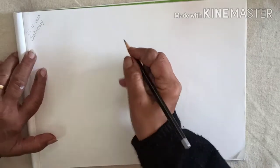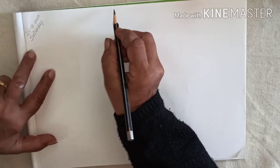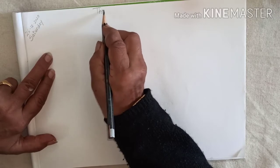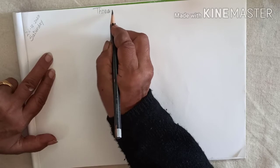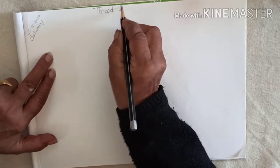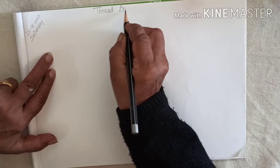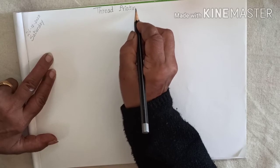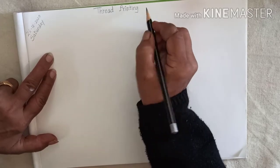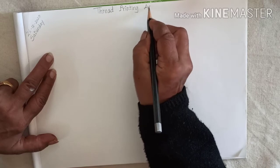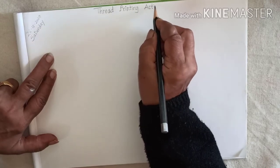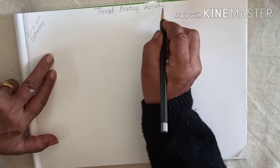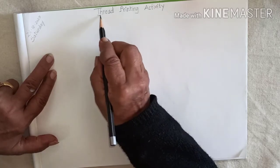And the heading you have to write thread printing activity. Okay? Now start writing T, H, R, E, A, D. Thread P, R, I, N, T, I, N, G. Printing activity. A, C, T, I, V, I, T, Y. Thread printing activity.